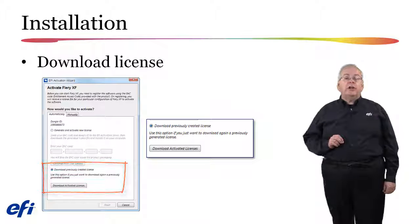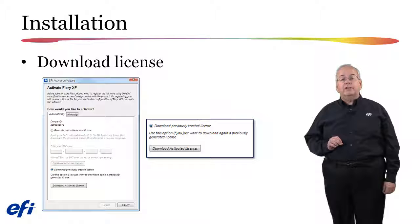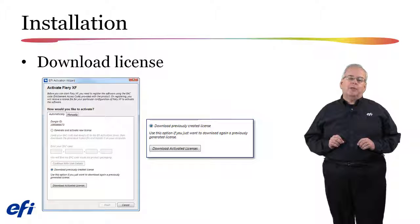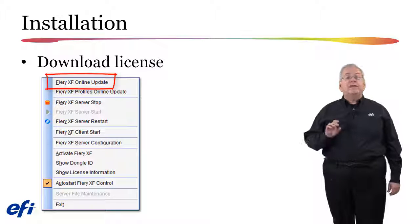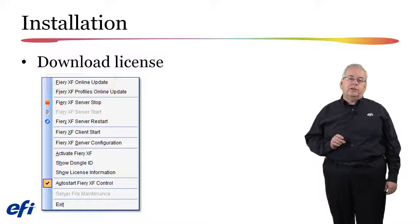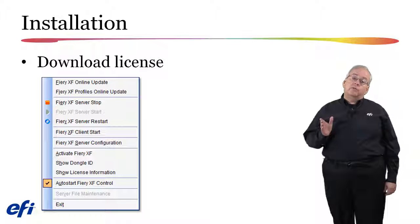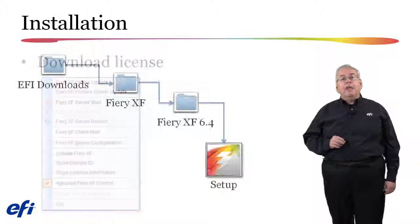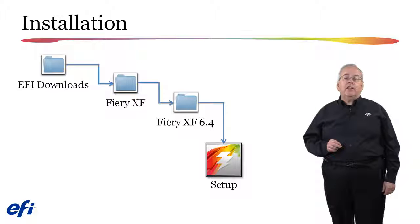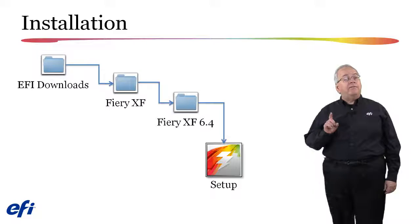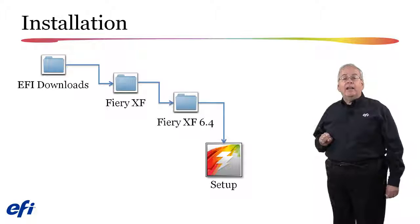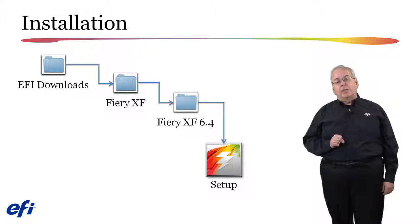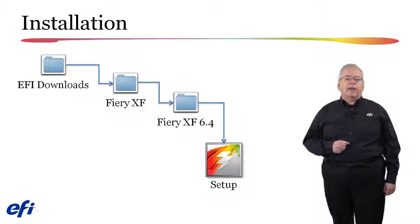Make sure that you restart your FieryXF Server after installing your license but before starting the upgrade process. Next, use the FieryXF Online Update option to download and install the update on your Fiery server. Please note that the download is over 2GB in size, so plan accordingly. If you have tried to use the FieryXF Control Online Updater before your upgrade license was installed, the updater will be available without having to re-download it, located in an EFI Downloads folder on your desktop. Simply navigate through the subfolders and launch the setup application.